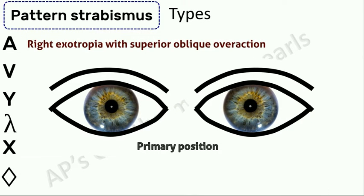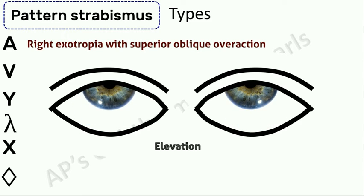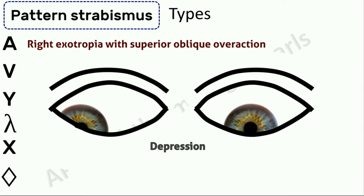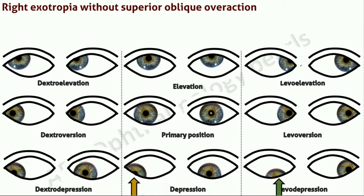Now let's see a case of right exotropia with superior oblique overaction. This is midline upgaze, and in midline downgaze again you can see the greater divergence of the right eye due to superior oblique overaction, producing an A pattern exotropia. So superior oblique overaction produces an A pattern strabismus. Without superior oblique overaction this would have been the position of the right eye; with overaction there is greater divergence in downgaze. You can also see the over-depression in adduction due to superior oblique overaction in levodepression.